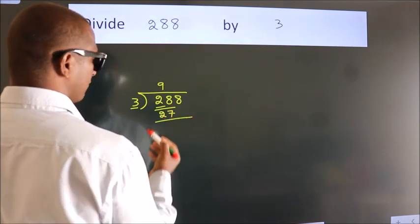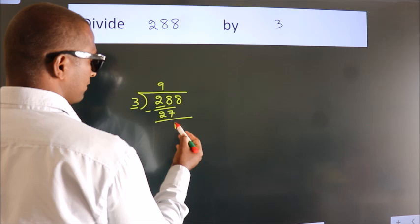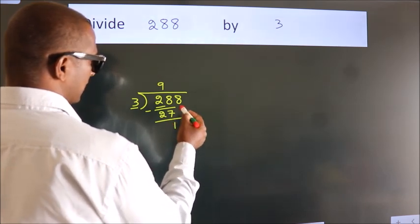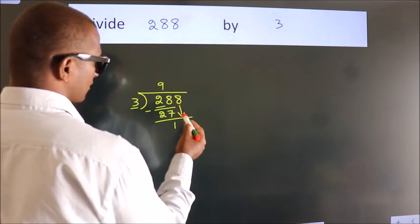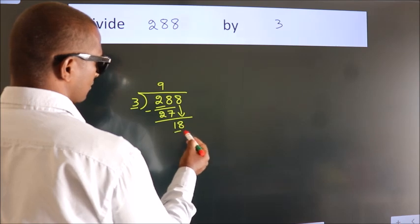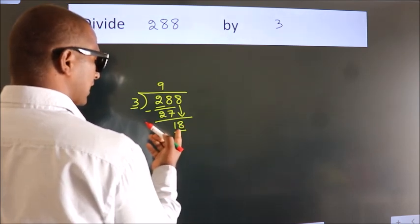Now we should subtract. We get 1. After this, bring down the beside number, so 8 down. So 18. When do we get 18?